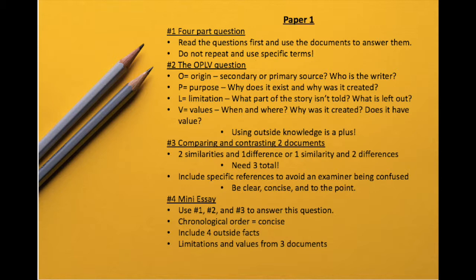For number three you will be comparing and contrasting essentially in three sets. You will be comparing and contrasting two sources that are given to you. The exam will tell you which two sources you will be looking at, and you will include two similarities and one difference, or one similarity and two differences between those two documents. It doesn't matter how many similarities or differences that you have, just as long as you have a total of three. When you include these similarities and differences, you need to remember to include specific references to the document so that there isn't confusion for the person grading your paper, because that will result in a reduction of your final score.